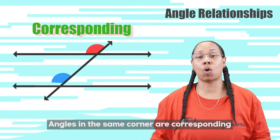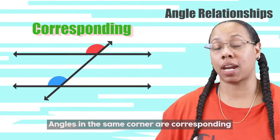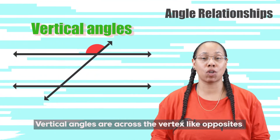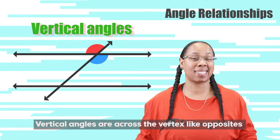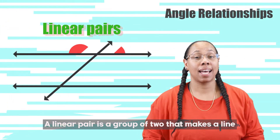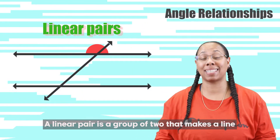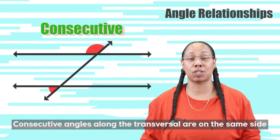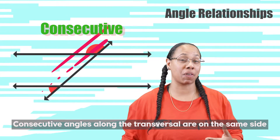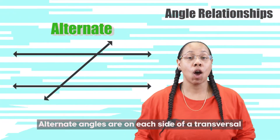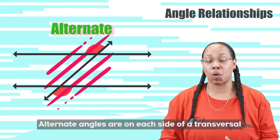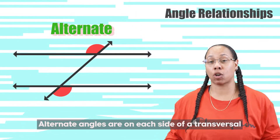Angles in the same corner are corresponding. Vertical angles are across the vertex like opposites. A linear pair is a group of two that makes a line. Consecutive angles along the transversal are on the same side. Alternate angles are on each side of a transversal.